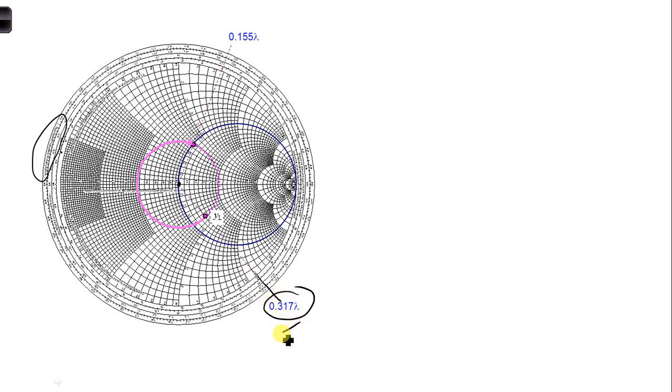Then we're going to rotate all the way around to this location, which is a straight line from the center of the Smith chart to here where we cross the G equal 1 circle in the top half of the Smith chart. And then straight line out to the outside, and we can read off the value on the wavelengths towards the generator scale, which is 0.155 lambda.